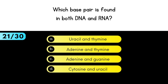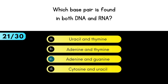Which base pair is found in both DNA and RNA? Adenine and guanine is the answer.